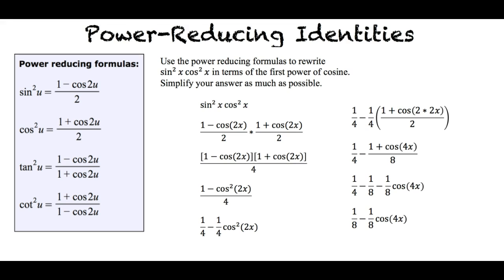First we identify an expression involving the second power of a trigonometric function. Then we reduce the power so that the trigonometric function is to the first power using power reducing identities. Finally we simplify the equation. It looks like you're ready to solve more power reducing identity problems.